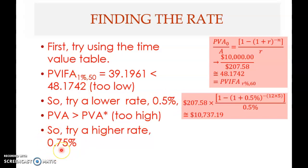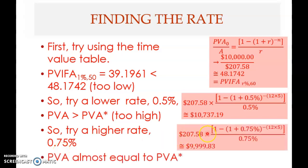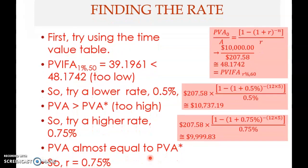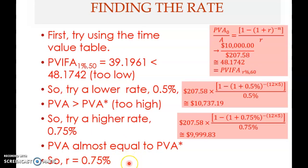At 0.5 percent it's too low, at one percent it's too high, so you try something in between: 0.75 percent. Using the same payment of 207.58 but replacing the rate with 0.75 percent, you find that the present value is lower at 9,999.83 — very close to 10,000. Therefore, r equals 0.75 percent.